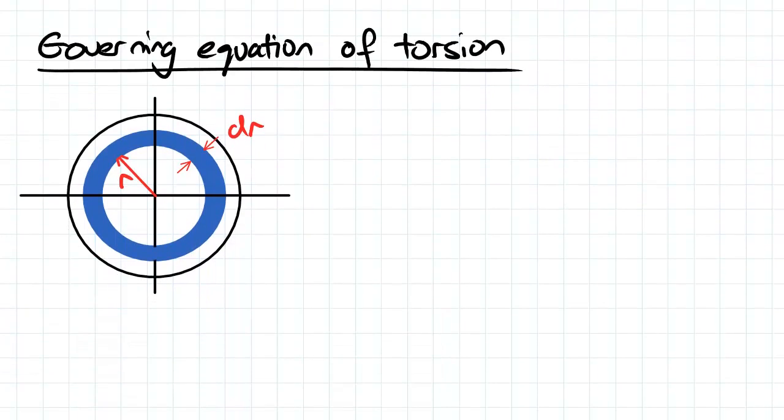So we've got an annulus here. It's got an arbitrary changing radius r and a thickness dr.